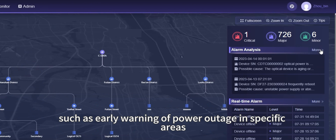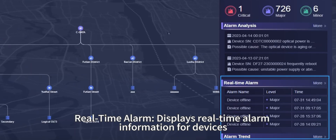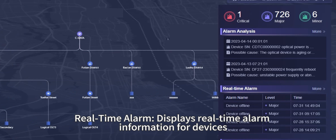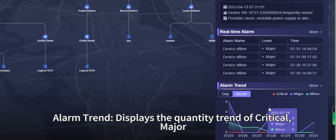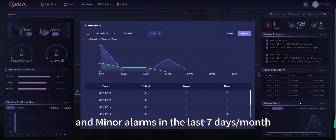Alarm Analysis provides intelligent analysis of alarm data, such as early warning of power outage in specific areas or the aging of optical devices. Real-time Alarm displays real-time alarm information for devices. Alarm Trend displays the quantity trend of critical, major, and minor alarms in the last seven days or last month.